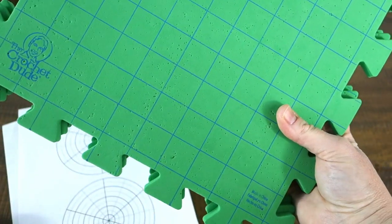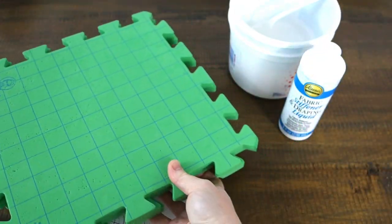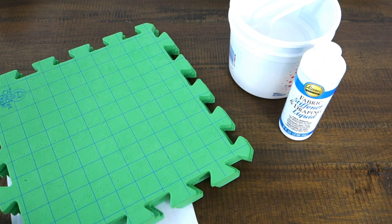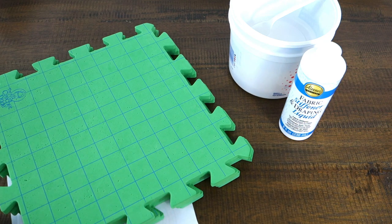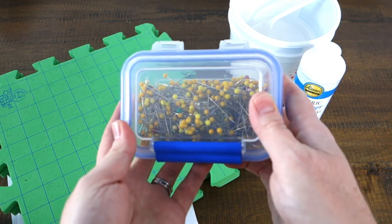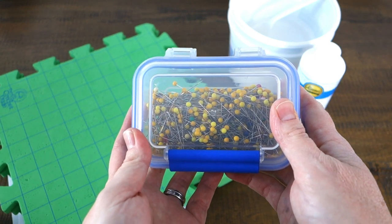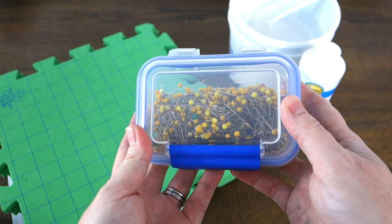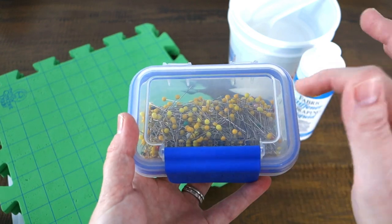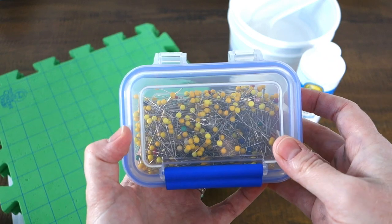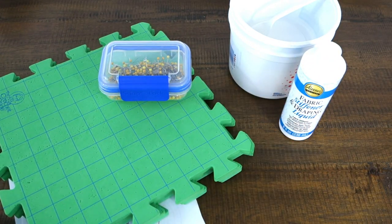Then we need something to put the pins in. I use my blocking boards. You can use any kind of foam blocks or mats or cardboard or anything that will hold a pin when you stick it in there. Pins are also needed. I recommend using rust-proof pins so that you don't get rust on your nice white snowflakes. I also recommend using either T-pins or pins with little heads on top so that you can get a better grip on them without hurting your fingers.